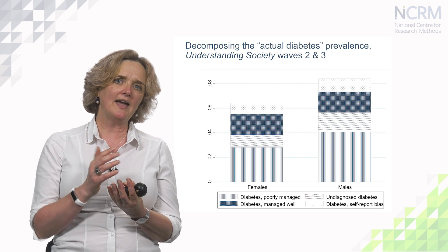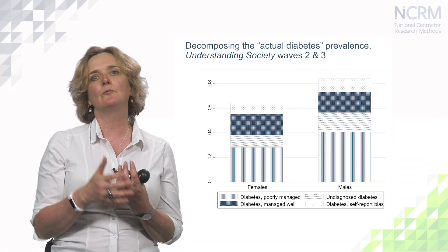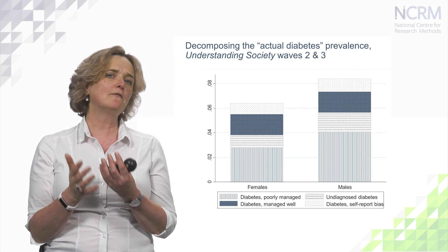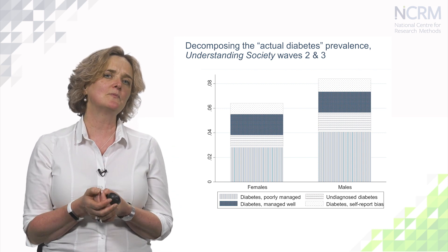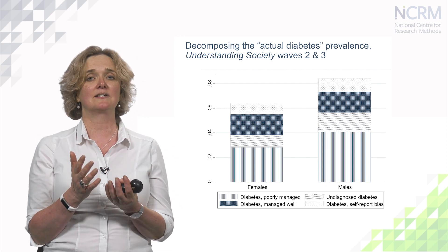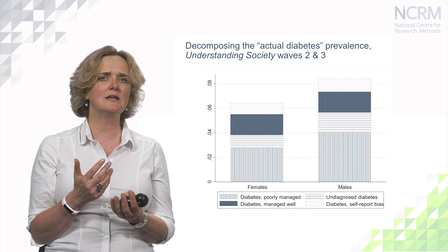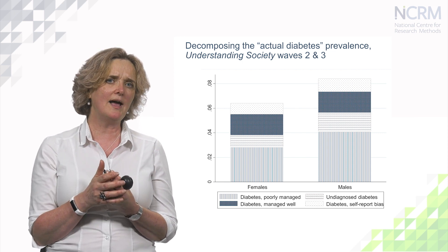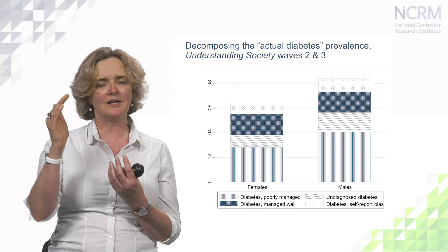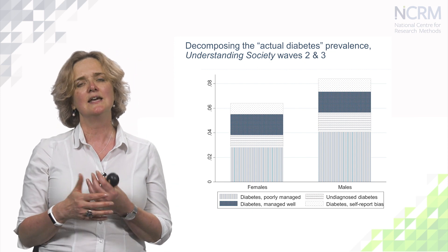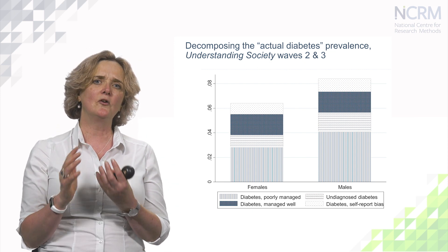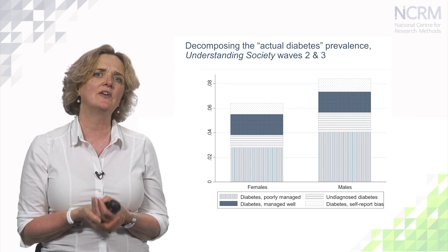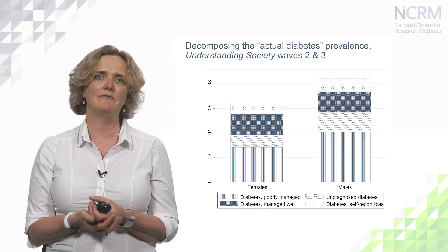Why people don't tell us they have diabetes when they clearly are being treated for it, we don't really know — but that's something for people who design surveys to think about. In terms of healthcare, we've identified a number of groups here who might need some support. If we look at those groups by their education level, we can see that those people who aren't managing their diabetes very well — those whose blood sugar levels are still raised — seem to be those with less education. And so that might help us think about how we might target care for them.